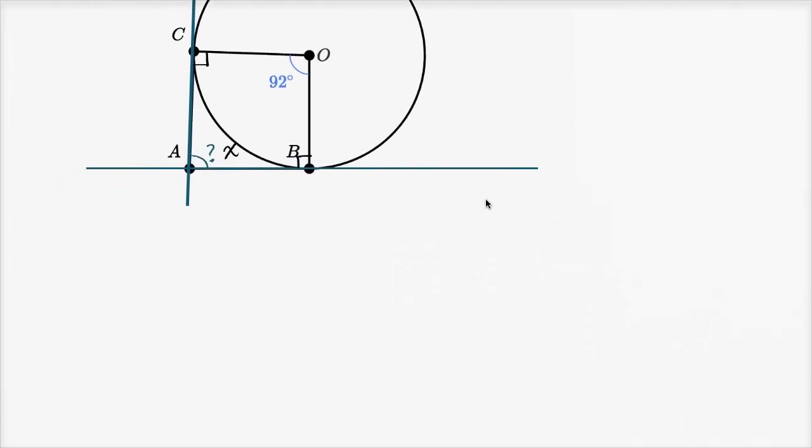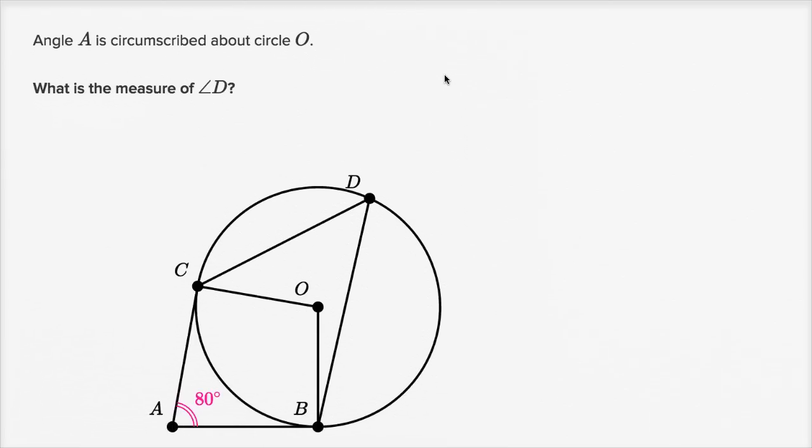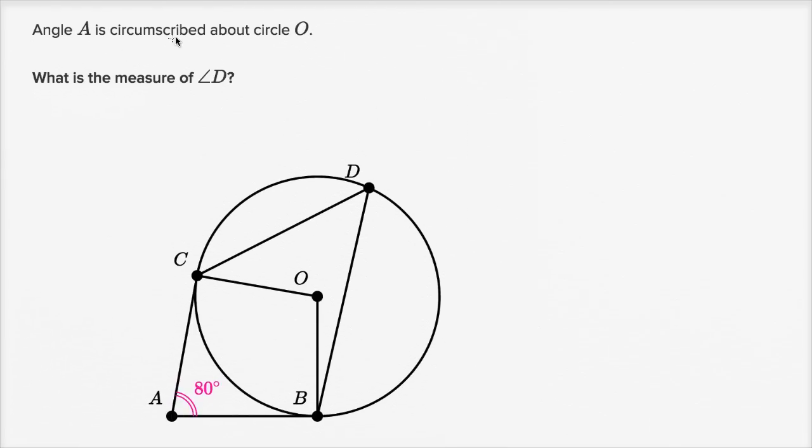Now let's do one more of these. These are surprisingly fun. So it says angle A is circumscribed about circle O. We've seen that before in the last question, and they said, what is the measure of angle D? So we want to find the measure of that angle, and let's call that x again.